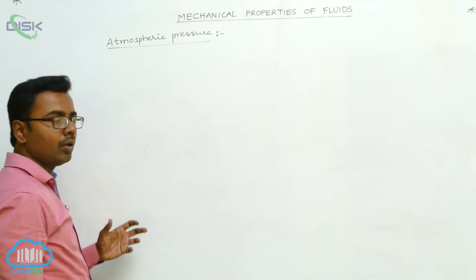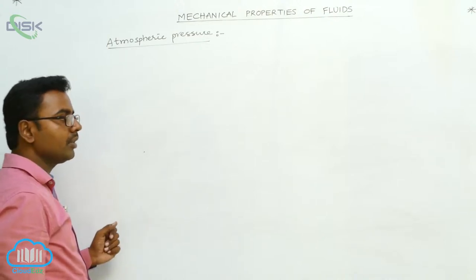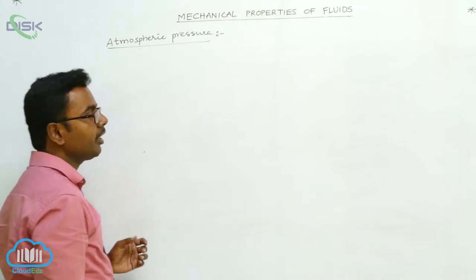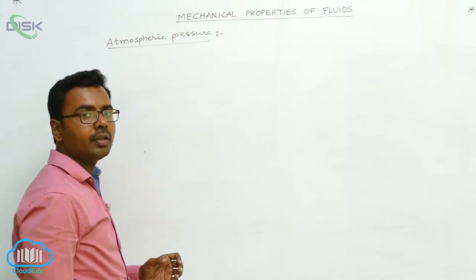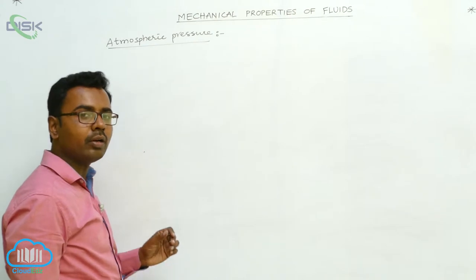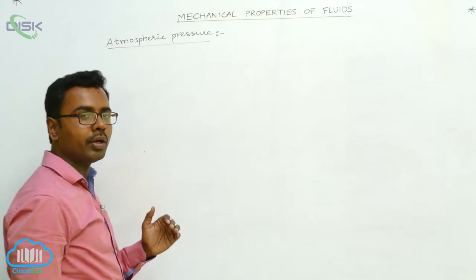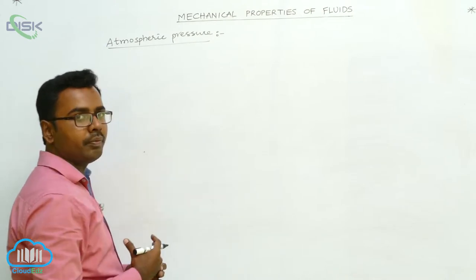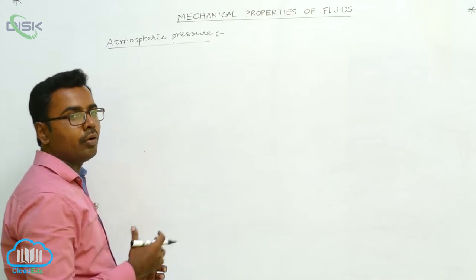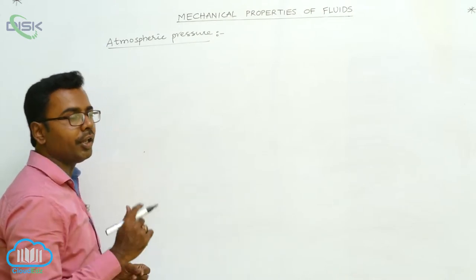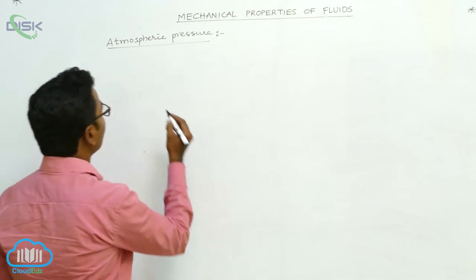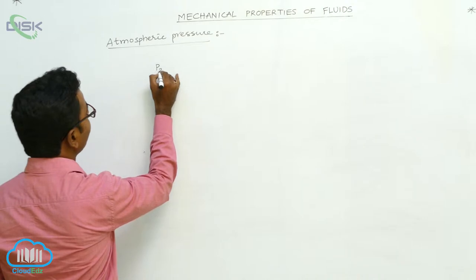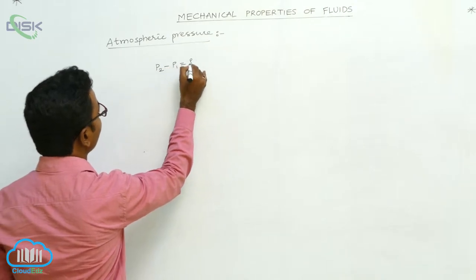Atmospheric pressure. How do we understand what is meant by atmospheric pressure? Atmospheric pressure at a point is nothing but the weight of the air column extending from that point to the atmosphere, having area of cross-section unity. It means we derived a formula that P2 minus P1 is equal to rho g h.